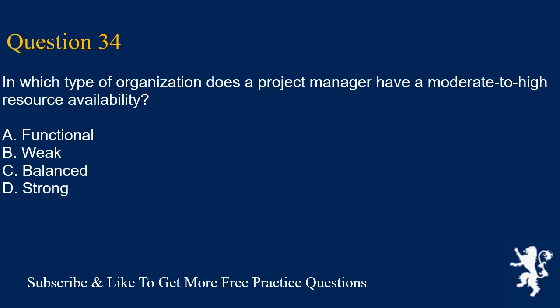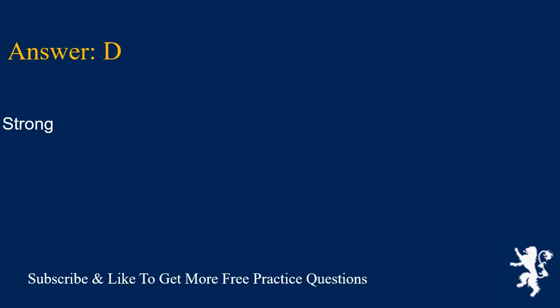Question 34: In which type of organization does a project manager have moderate to high resource availability? A. Functional. B. Weak. C. Balanced. D. Strong. Answer is D. Strong.